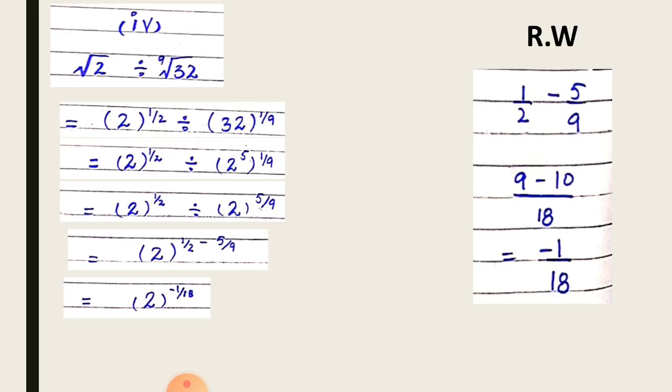Now here 2 on the whole power minus 1 by 18. If you have negative power, make it positive by taking the reciprocal. So if you write the radical form, it will become 1 over radical of order 18 having 2.